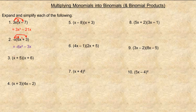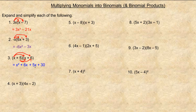In number three, you're multiplying all terms in one binomial by all terms in the other. Using arrows: x times x is x squared, and x times 6 is 6x. Then five times x is 5x, and five times six is plus 30. The two middle terms, 6x and 5x, are like terms and add to 11x. So the final answer is x squared plus 11x plus 30.